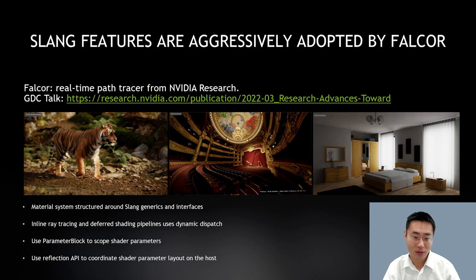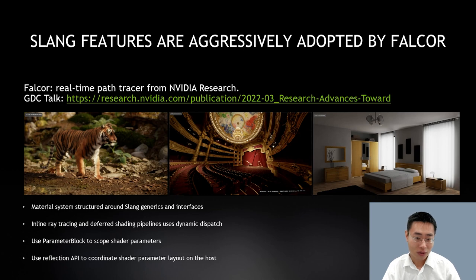In that talk you will find more history and background on research insights that started the Slang project and how they are carried into production to address real-world challenges in real-time rendering applications. The Slang features I'm about to show you today are adopted extensively in NVIDIA's real-time path tracer called Falcor. Recently, the Falcor developers have refactored their material system to make all the key components structured around Slang generics and interfaces, and all shader parameters in Falcor are passed via Slang's parameter block feature.